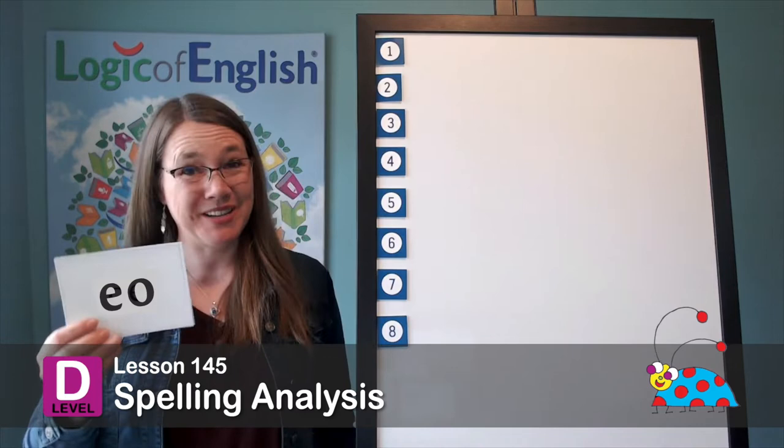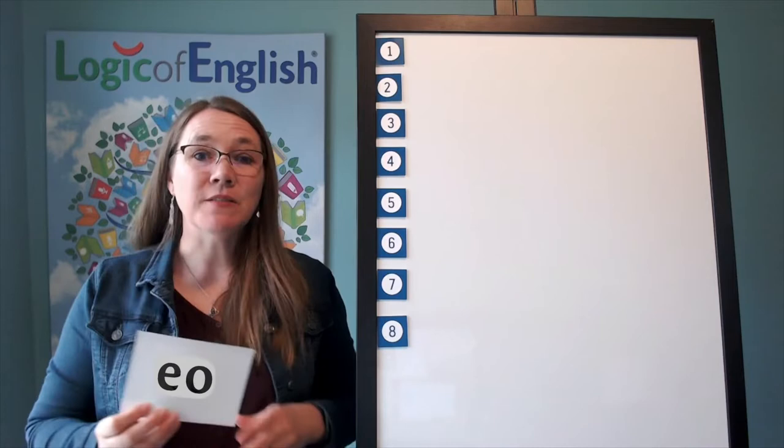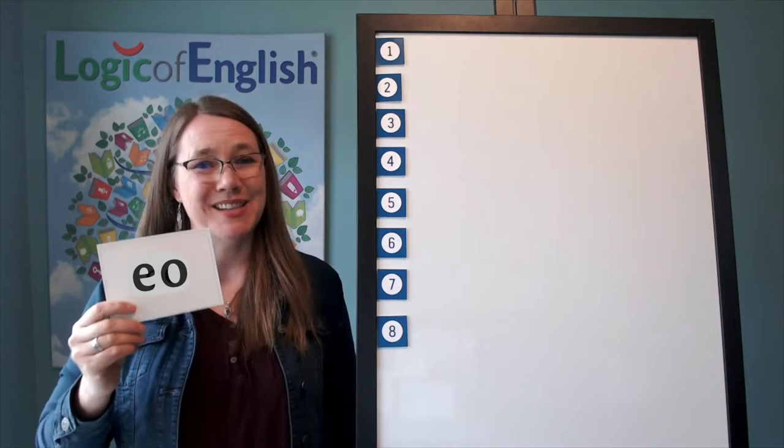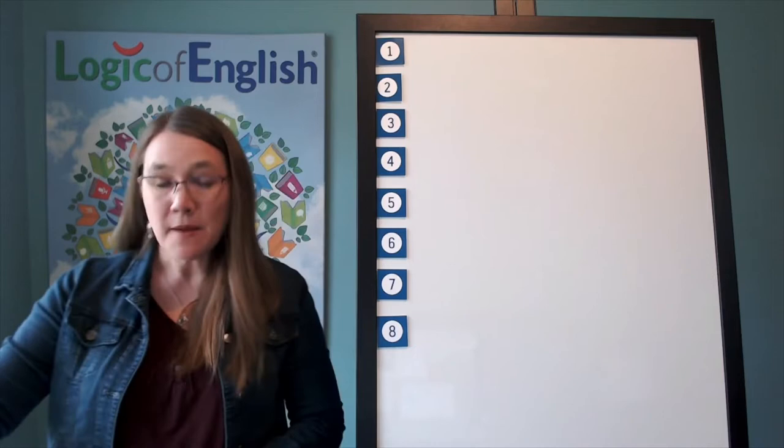It's time for spelling analysis. Are you ready? Today we get to use our advanced phonogram E. Can you say that with me? E. So if I do this and I say use the advanced phonogram E, I mean this one. One last time, what does this say? E. All right.